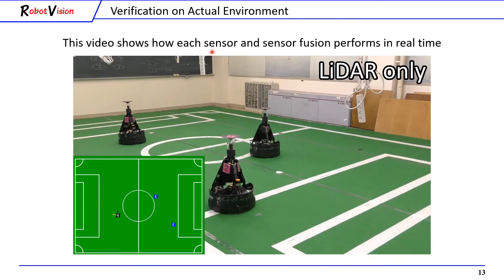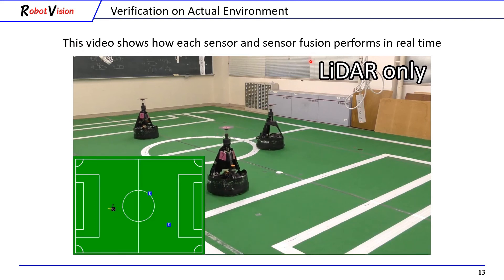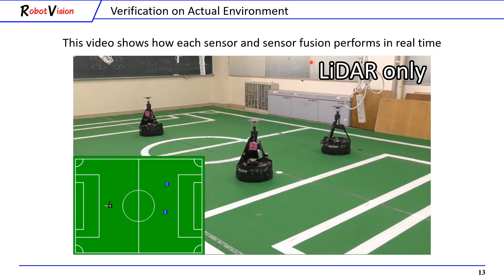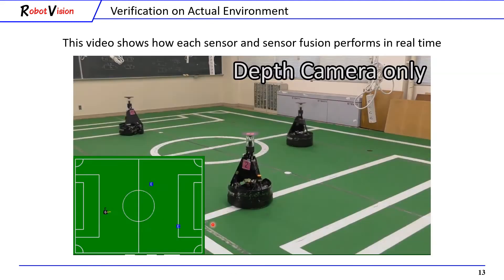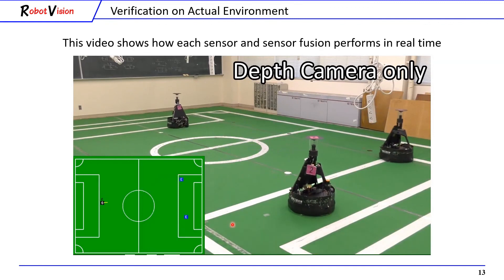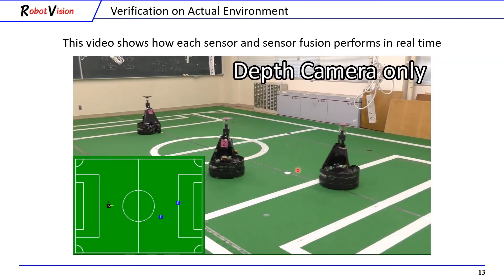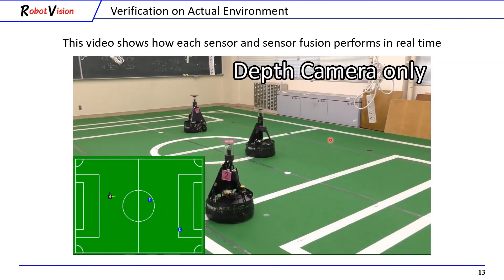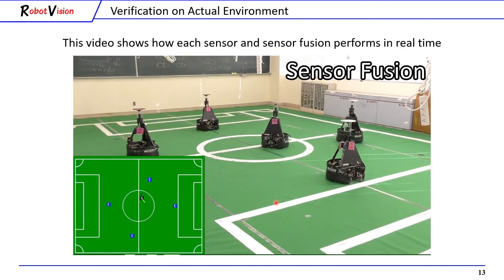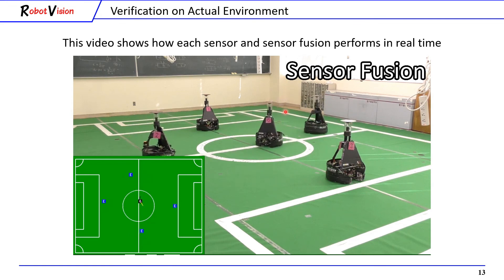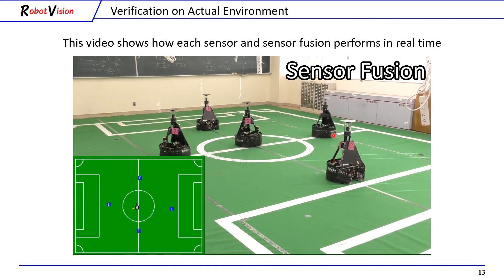This video shows how each sensor and sensor fusion perform in real time. This is when only a LIDAR sensor is used to map two robots around it, with the mapping result shown here. Next is when only a depth camera is used. We shot this video in a 6 by 8 meters field. This is the final result of sensor fusion performed in real time. Note that the self-localization error of the main robot is included and affects the target mapping error.